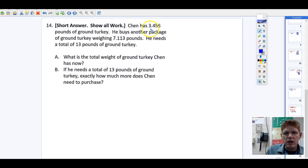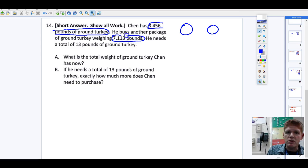Number 14 in our review here, Chen. This is a short answer, so we've got to make sure we show our work and write in sentences. Chen has 3.456 pounds of ground turkey. He buys another package, and this weighs 7.113 pounds. He needs a total of 13 pounds of ground turkey.